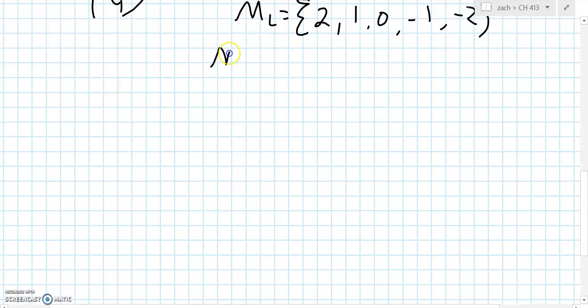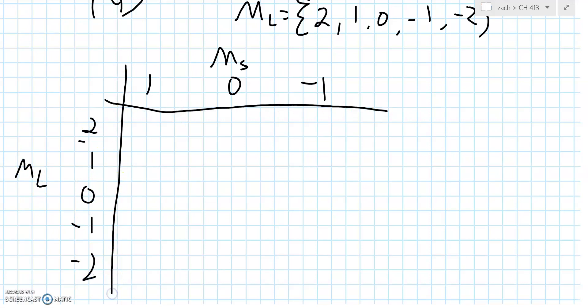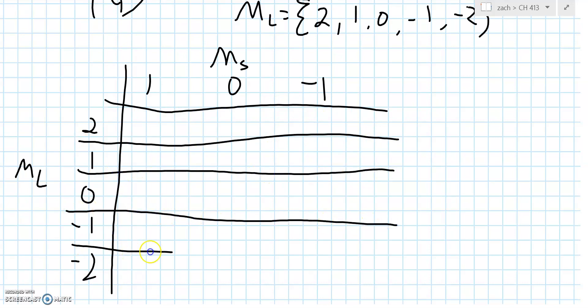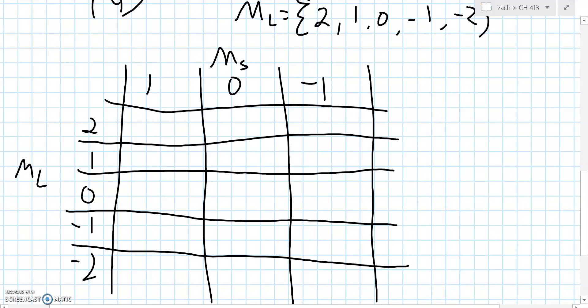We're going to make a chart. This chart is going to be M sub S indicating columns and M sub L indicating rows. So we got M sub S up here, we're rocking out our 1, 0, minus 1, and then we got M sub L over here. We got 2, 1, 0, minus 1, minus 2. This is the chart that we're going to be looking at.